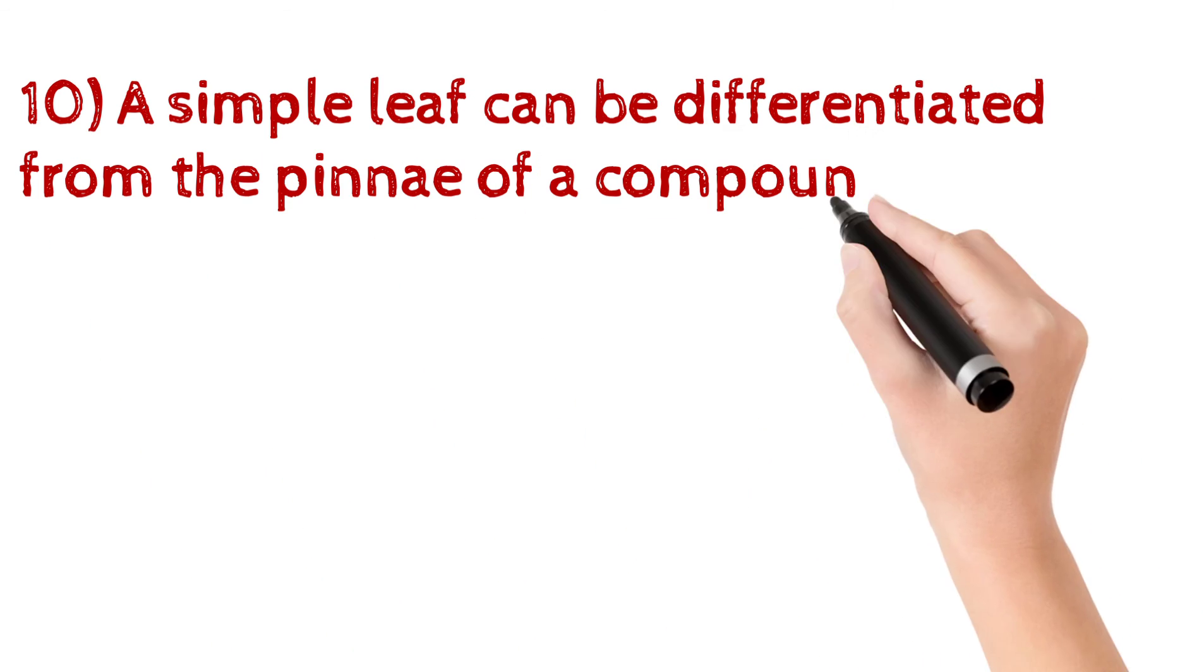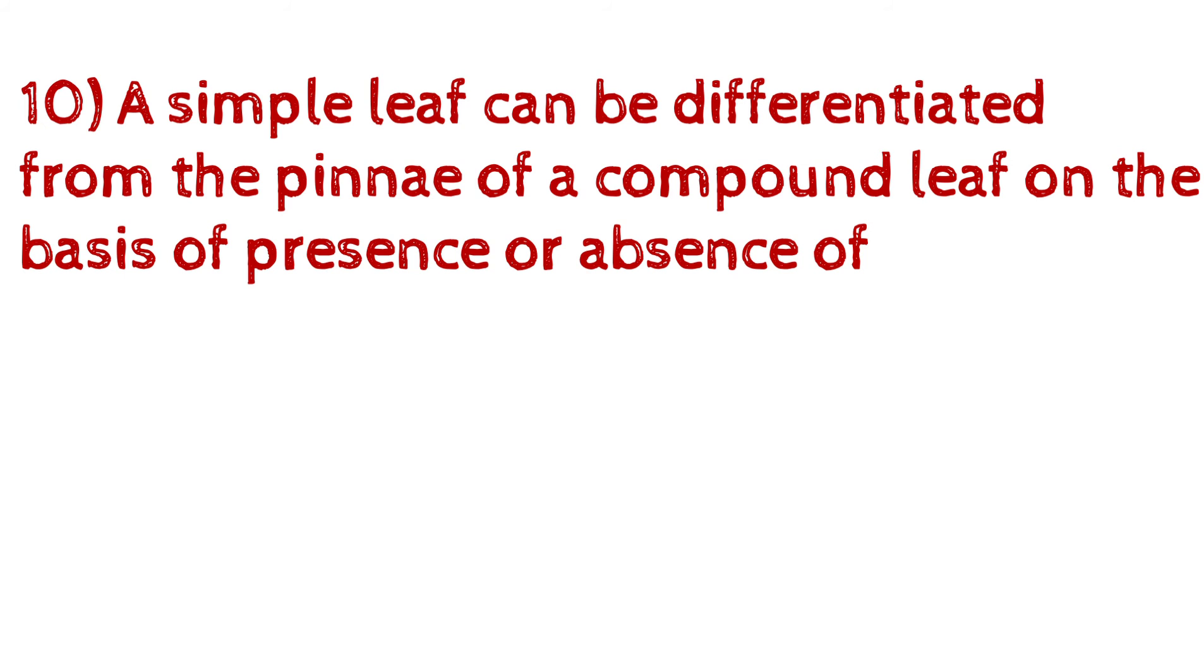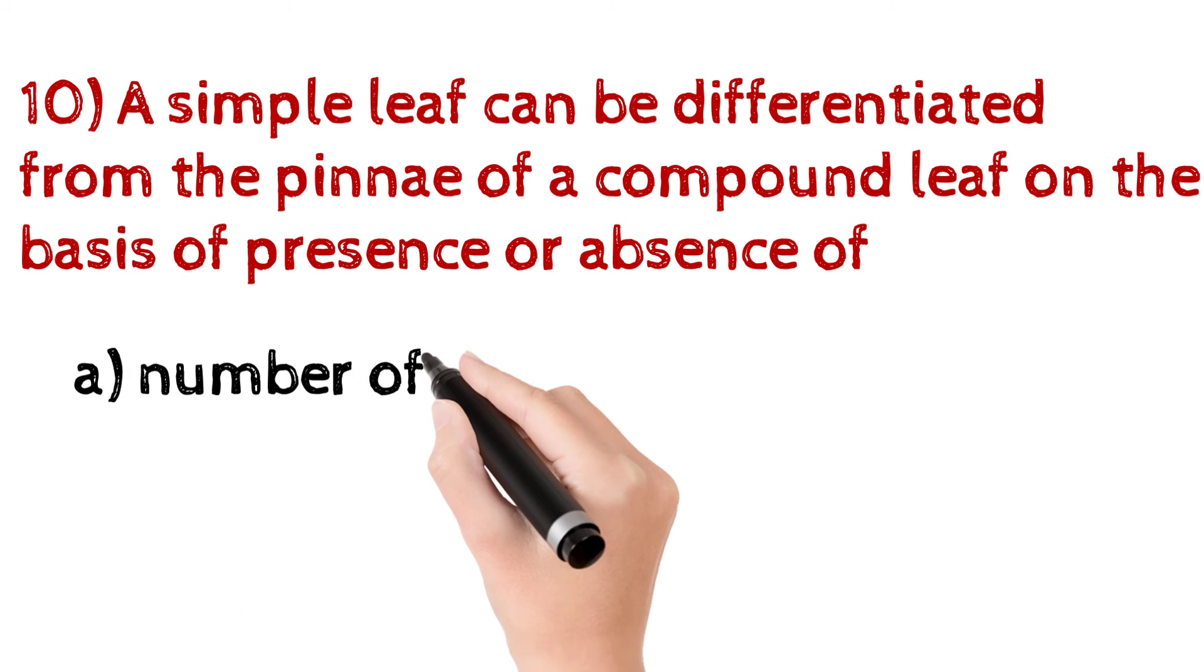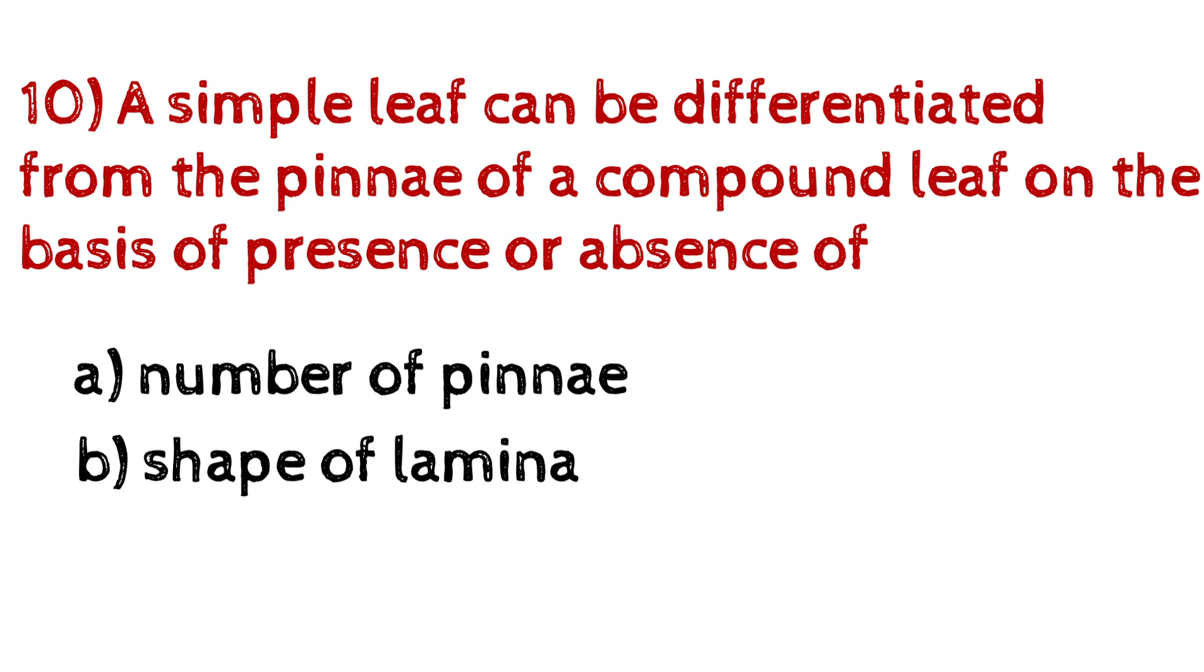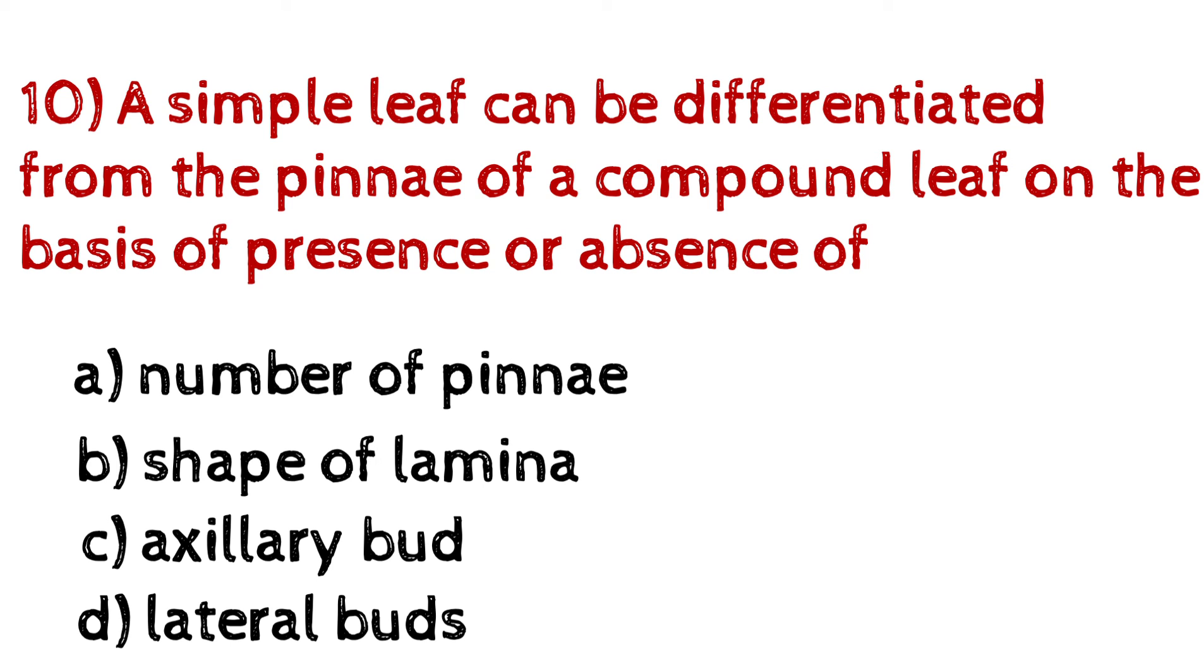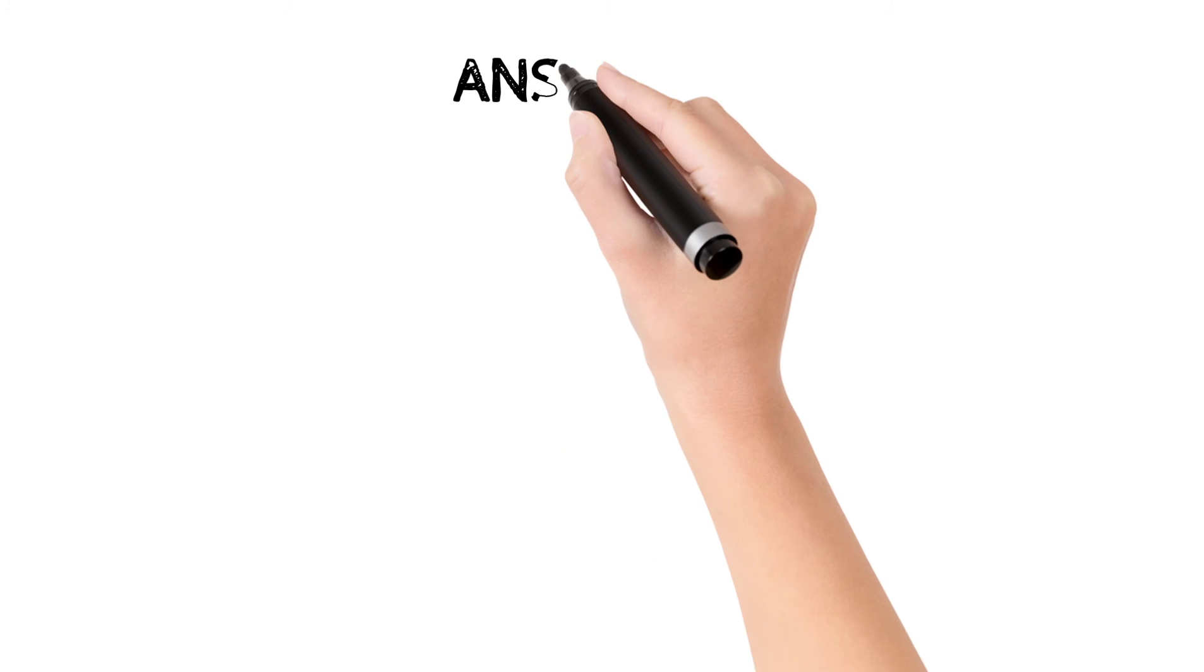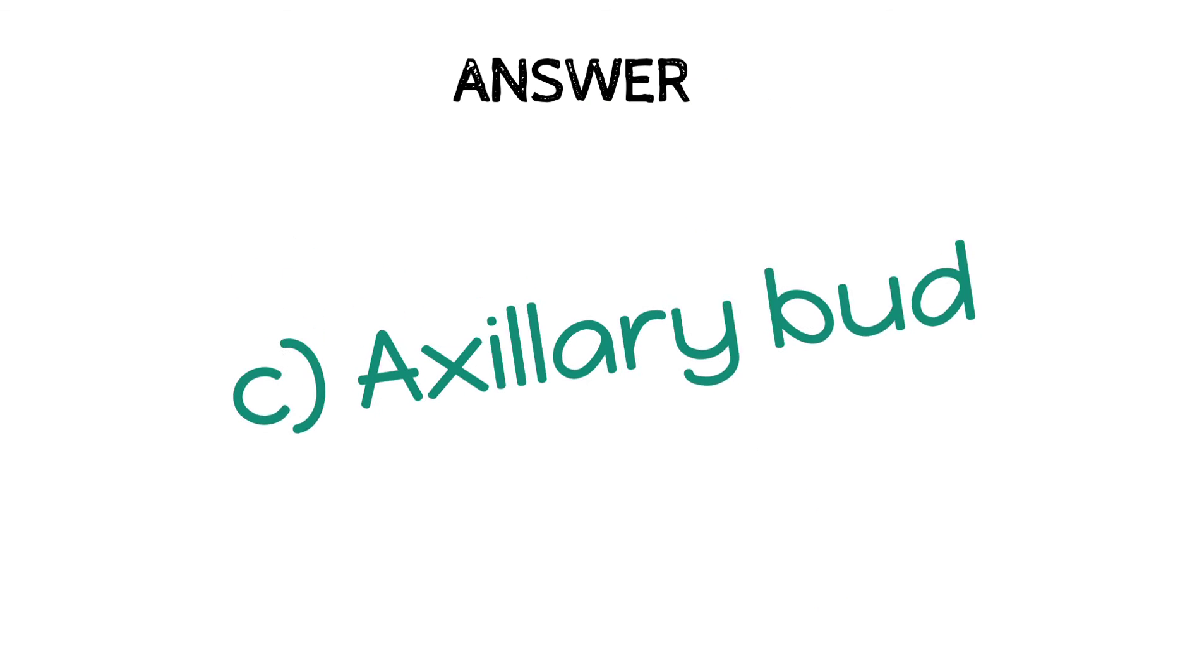Question number 10: A simple leaf can be differentiated from the pinna of a compound leaf on the basis of presence or absence of A. Number of pinnae, B. Shape of lamina, C. Axillary bud, D. Lateral buds. And the answer is C, Axillary bud.